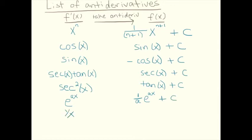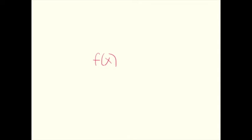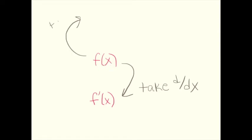The antiderivative of 1 over 1 plus x squared is arctangent plus C. Now for a notation change: instead of writing f prime every time I give you a derivative, sometimes we just call it f, and we call the antiderivative capital F. If I start with a function and take the derivative, I get f prime. If I start with a function and take the antiderivative, I write capital F. The derivative of the antiderivative always gives back the original function.